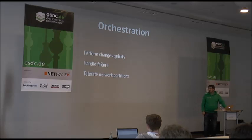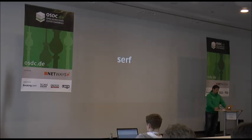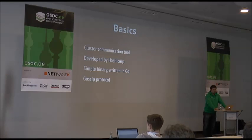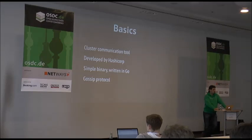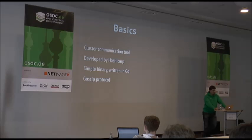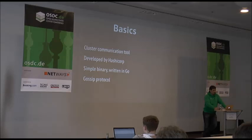The first one is Serf. Serf is a quite young tool developed by HashiCorp, which is the company of Mitchell Hashimoto, the author of Vagrant. It's a cluster communication tool that's very easy to install — it's a simple binary written in Go. You download a zip file containing just the binary for your Linux platform, unzip it, put it in /usr/local/bin, and you can use it. Serf uses the Gossip protocol, which is a peer-to-peer protocol that doesn't need any central data store, unlike for example mCollective which needs a central message broker.